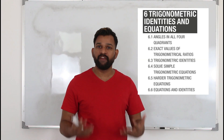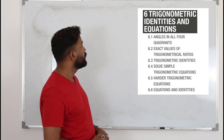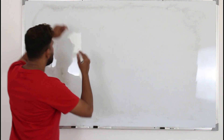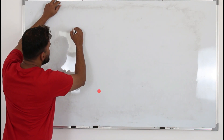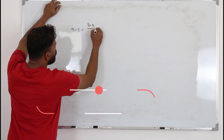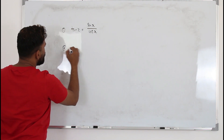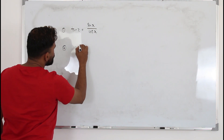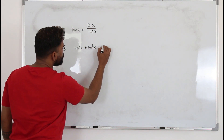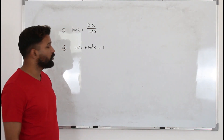Topic 6.3 is trigonometric identities, which is a very important one. We are going to learn only two trigonometric identities here. The first one is tan x equals sin x over cos x, and the second one is cos²x + sin²x = 1. These two identities you should memorize.